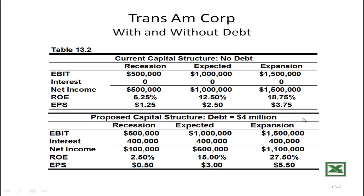When you use debt, it magnifies your gains and losses. In the expected case with $1 million in EBIT, there's now $400,000 in interest — $4 million in debt at 10%. Net income is $600,000. But remember, you have fewer shares. Return on equity is $600,000 divided by $4 million, which is 15% — higher than the no-debt case. EPS is $600,000 divided by 200,000 shares, which is $3. So debt magnified both return on equity and EPS.